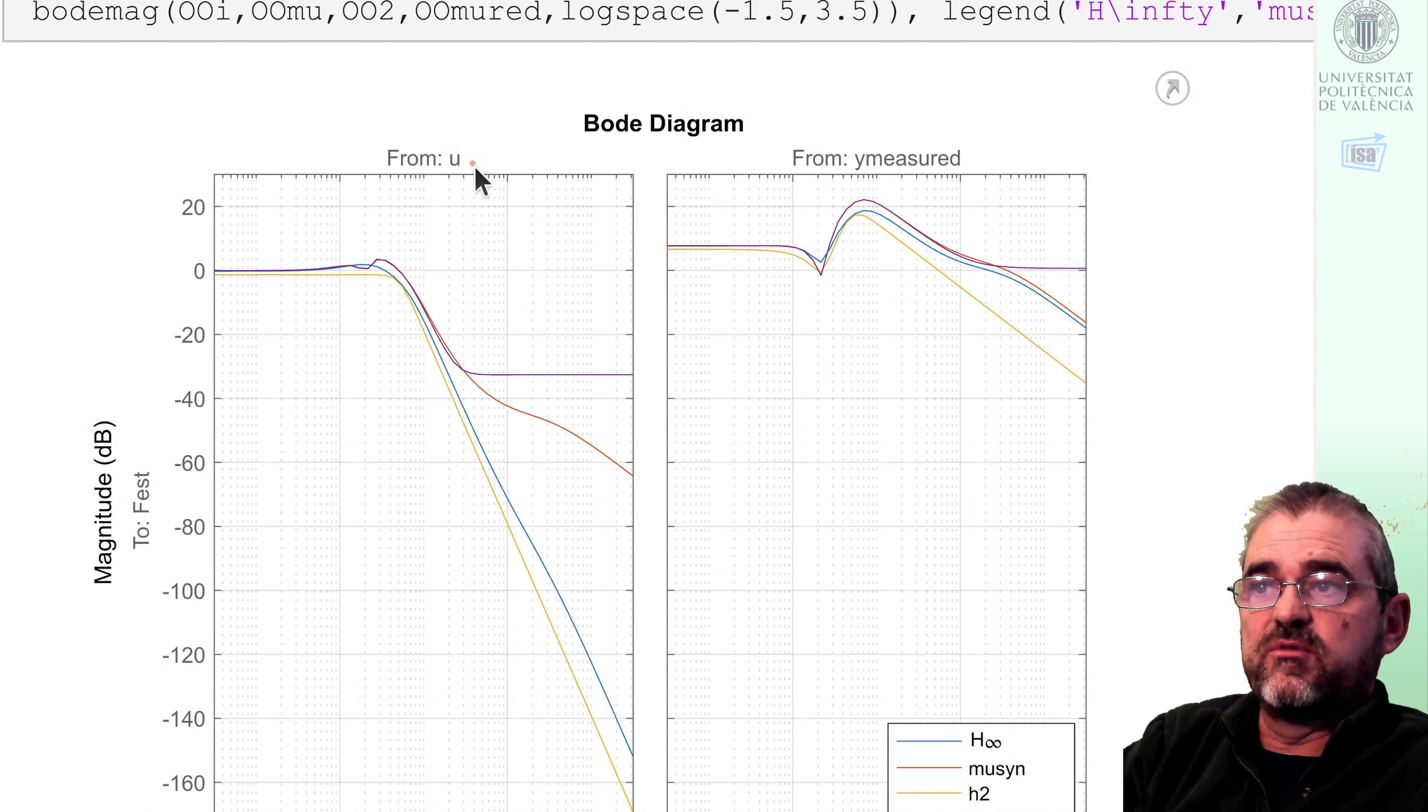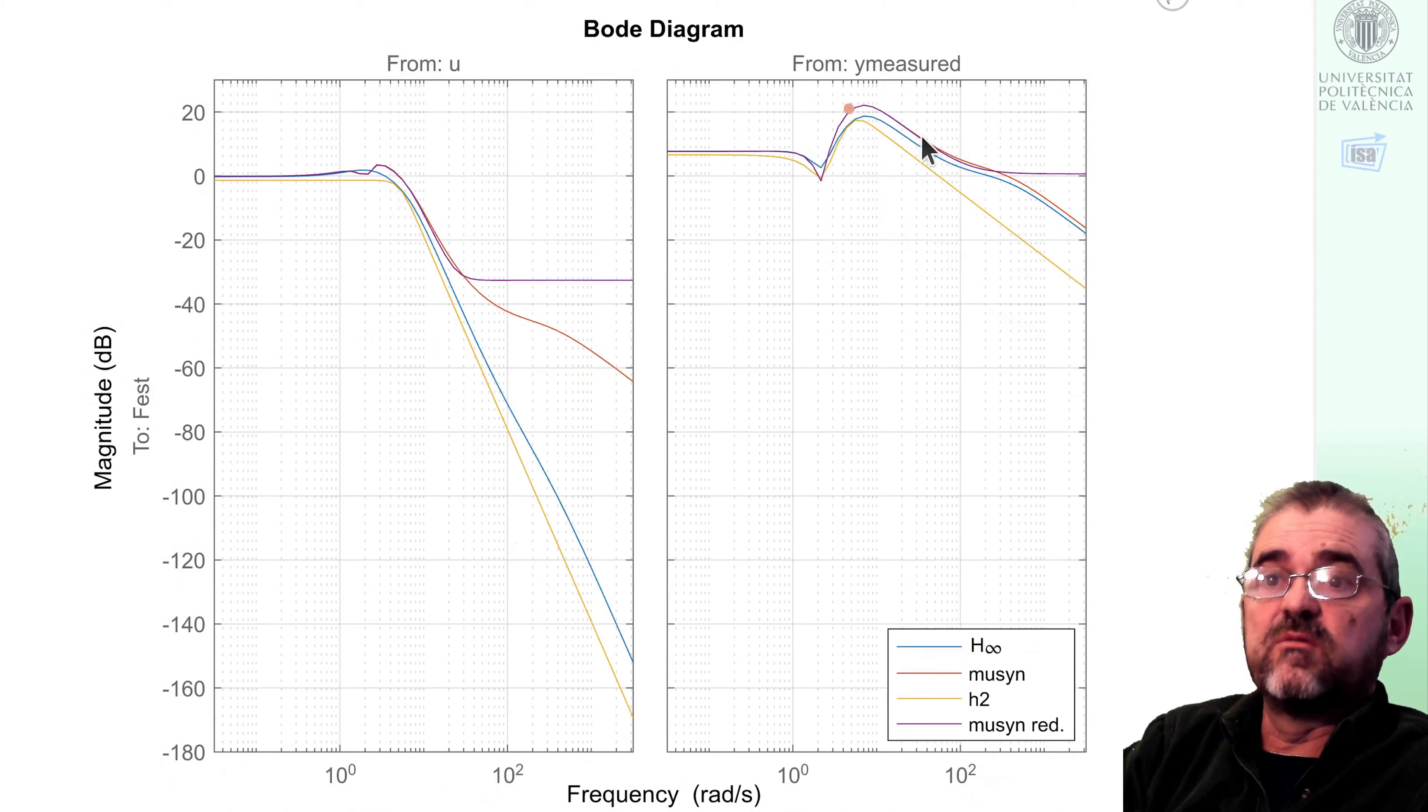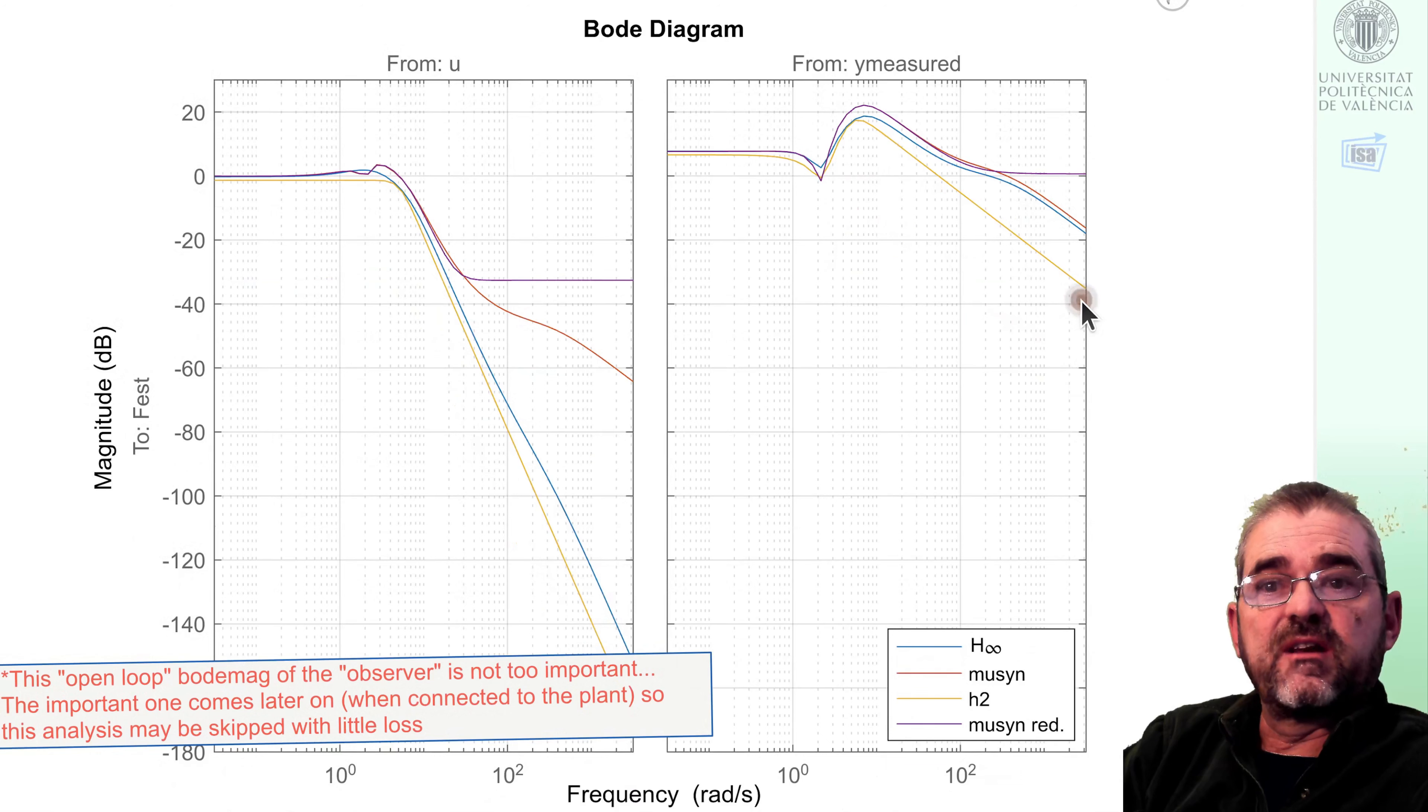So we will first look at the Bode magnitude diagram of the actual observer. It has an input u and an input y measured, so you can see somehow the amplification of high frequency noise. The lowest one is the yellow thing, the H2 minimum variance stuff, and H infinity, and even more mu synthesis have more high frequency amplification, so that it will almost certainly result in larger variance in time domain simulations, but we'll see that in another moment.